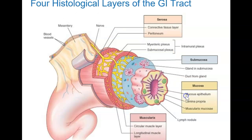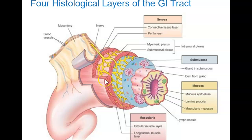Looking at each layer more closely: the mucosa layer is made up of epithelial cells, connective tissue, and muscle tissue — it's pretty complex, and is also referred to as the mucus layer. The submucosa layer's job is basically to connect it to the muscular layer. And then there's the serosa on the outside.